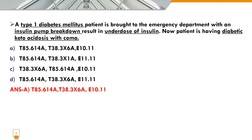Next: a type 1 diabetes mellitus patient is brought to the emergency department with an insulin pump breakdown resulting in underdose of insulin, and the patient is now having diabetic ketoacidosis with coma. We need to code: first, insulin pump breakdown — T85.614A; second, underdose — T38.3X6A; third, E10.11 — type 1 diabetes mellitus with ketoacidosis with coma.